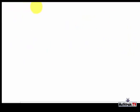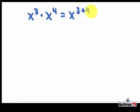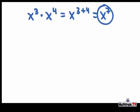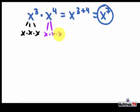Let's take some examples. If I have x to the third power and I want to multiply it by x to the fourth power, that's going to be x to the three plus four power, which is x to the seventh power. We can prove that: x to the third power is x times x times x, and x to the fourth power is x times x times x times x — so there's one, two, three, four, five, six, seven x's being used as factors. So it's x to the seventh power.